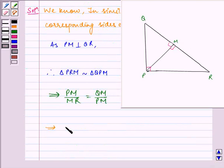Which implies on cross multiplication PM multiplied by PM is equal to MR multiplied by QM, which implies PM squared is equal to QM into MR.